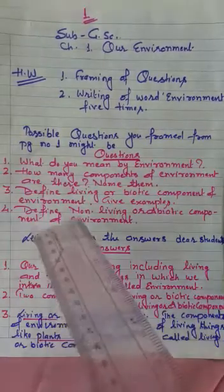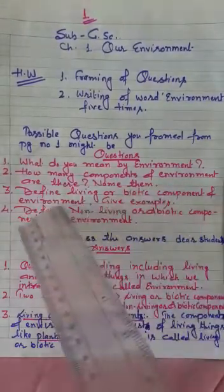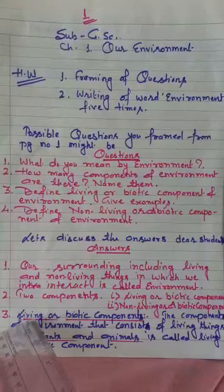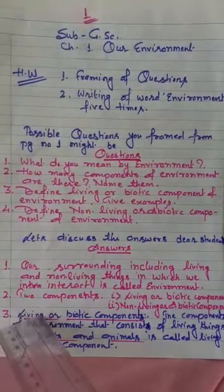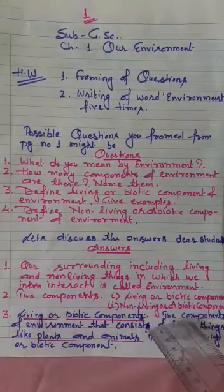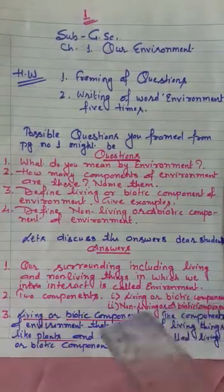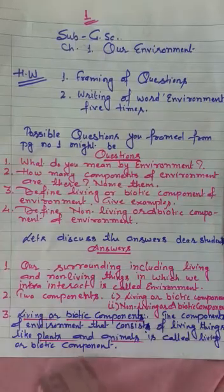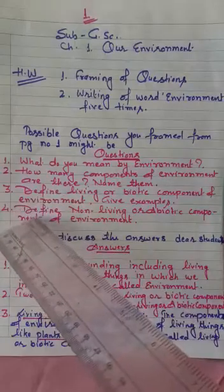Third question: define the living or biotic component of environment and give examples. To answer this question, you will put the heading 'Living or Biotic Component.' The component of environment that consists of living things like plants and animals is called the living or biotic component.